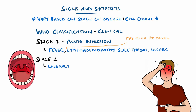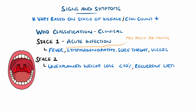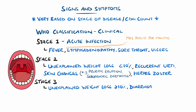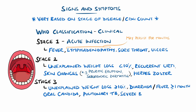Stage 2 features can include unexplained weight loss of less than 10%, recurrent upper respiratory tract infections, minor skin changes like pruritic eruption or seborrheic dermatitis, and herpes zoster infections like shingles. Stage 3 features include unexplained weight loss beyond 10% of body weight, unexplained fever or diarrhoea beyond 1 month, oral candida, and pulmonary tuberculosis or severe bacterial infections like meningitis.